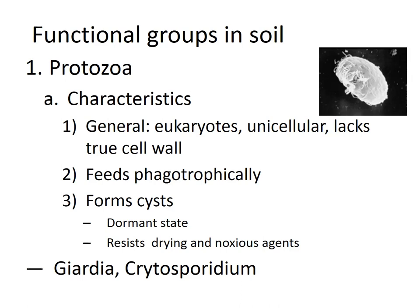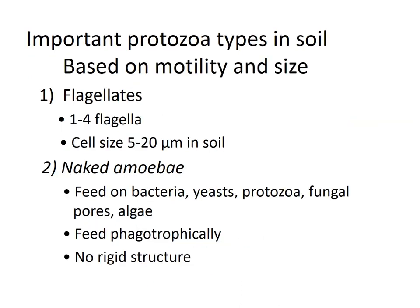Starting with protozoa: they are eukaryotes, unicellular, and lack a true cell wall. Most feeding occurs through phagocytosis. They can form cysts and remain in dormant states throughout the year when growth conditions are unfavorable. These cysts can resist drying and noxious agents. Examples include Giardia and Cryptosporidium, which can cause illness in the gastric system, including diarrhea and other digestive problems if ingested through contaminated food or water.